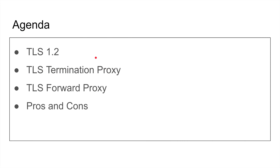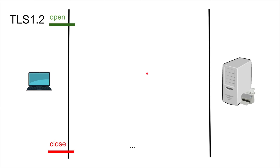We're going to discuss TLS 1.2 — not 1.3, because we covered that separately. TLS 1.2 is still the dominant version and has some flaws that make TLS termination proxies useful. We'll talk about the TLS termination proxy, the TLS forward proxy, and the pros and cons of termination. Go watch the full TLS video if you want a deep dive.